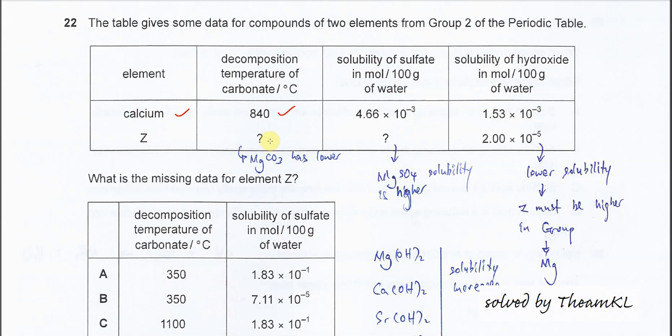For element Z, we don't know these values yet. The most important info given is that the solubility of hydroxide of Z is actually much lower because it is 10^-25, much lower than calcium.